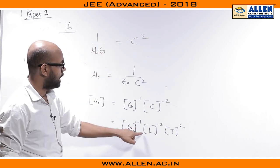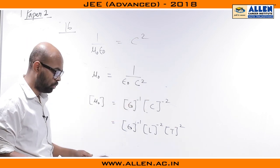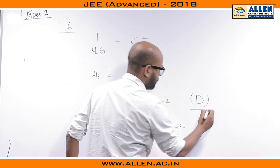If we put LT⁻¹ then L to the power minus 2, T to the power minus 1 to the power minus 2 which becomes T to power 2. So, answer of this question is D as given in the option.